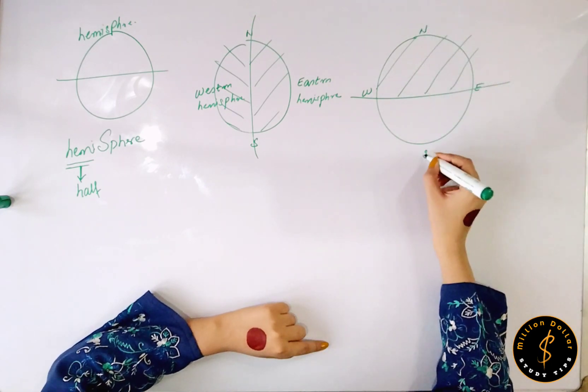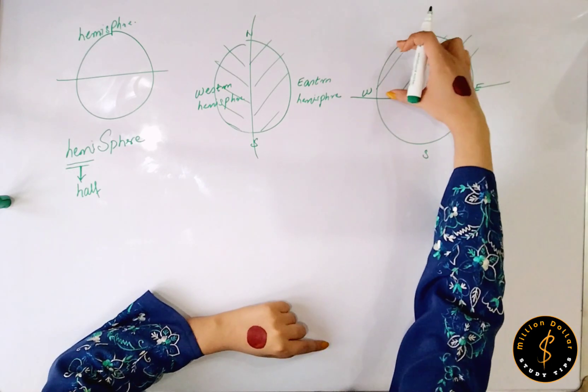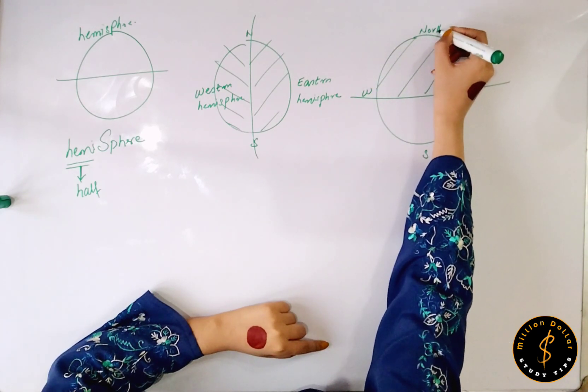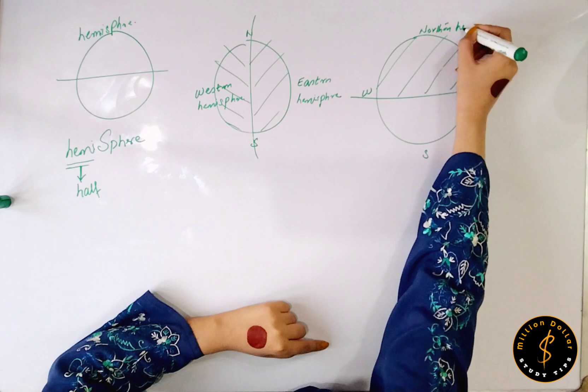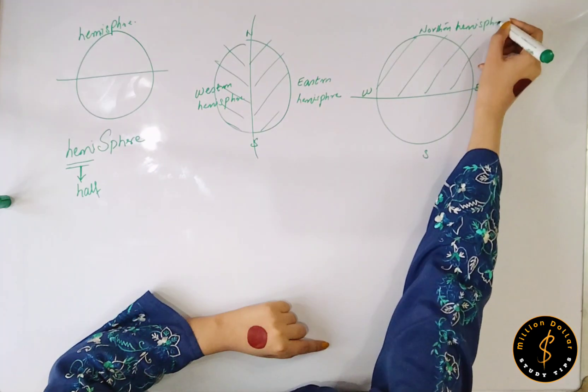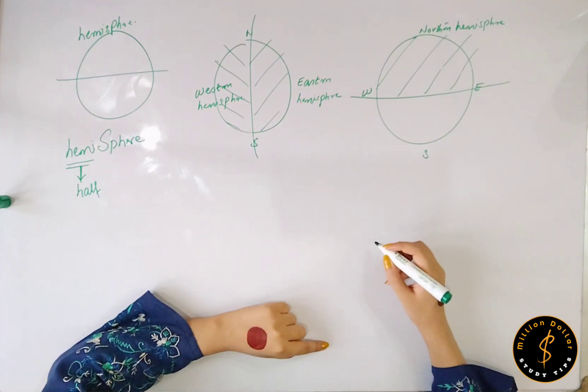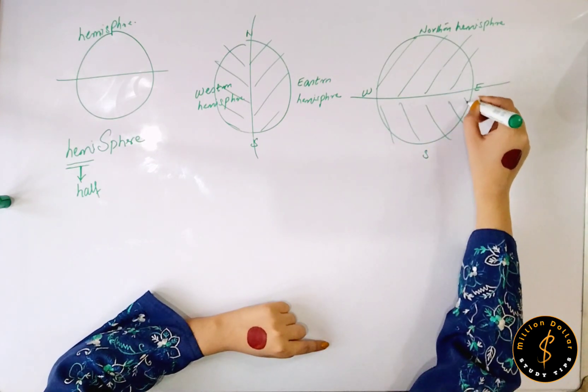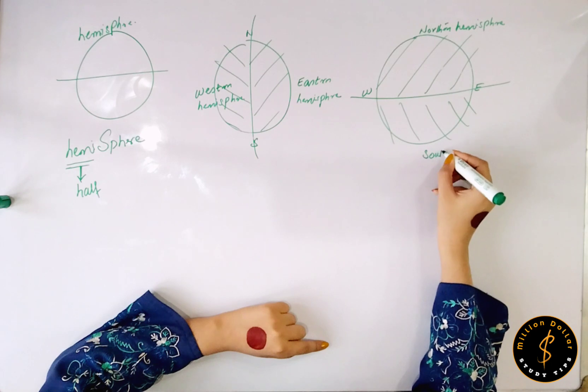Here we have north and here we have south. This whole portion of Earth will become your northern hemisphere. Similarly, this region will become your southern hemisphere.